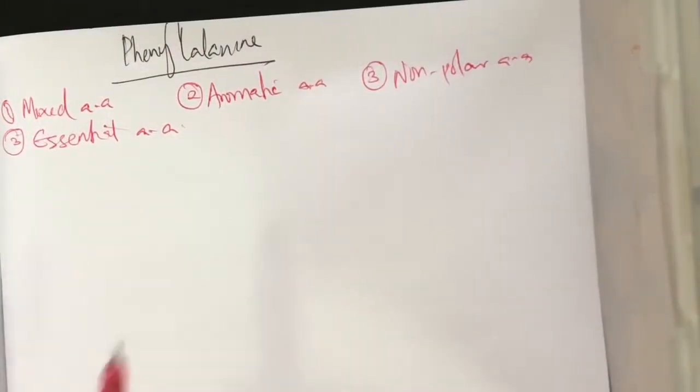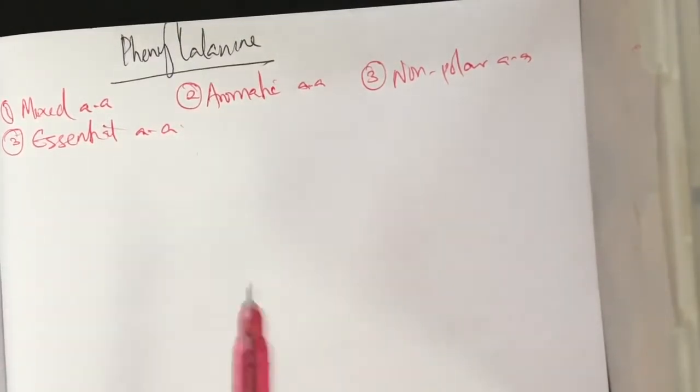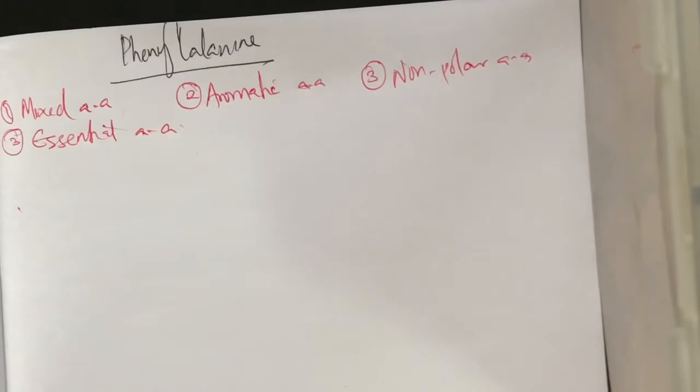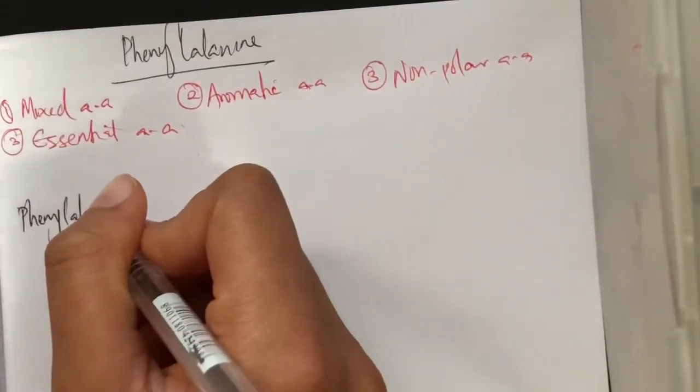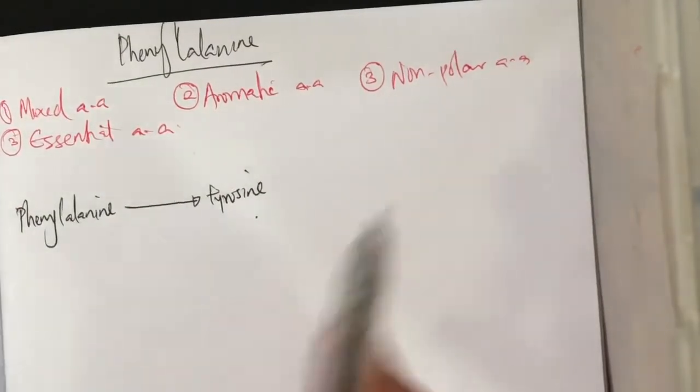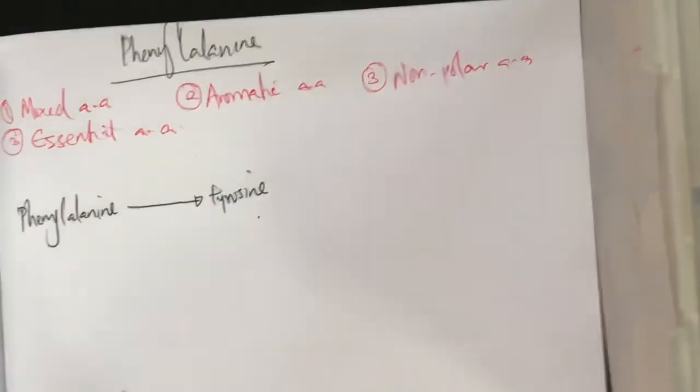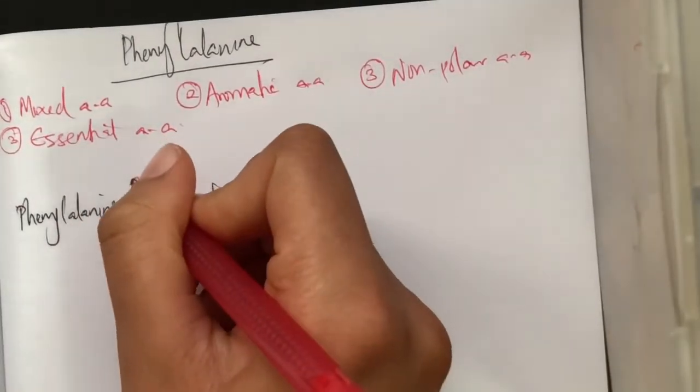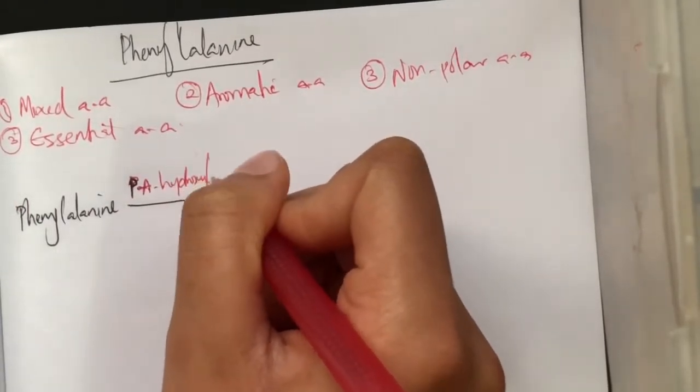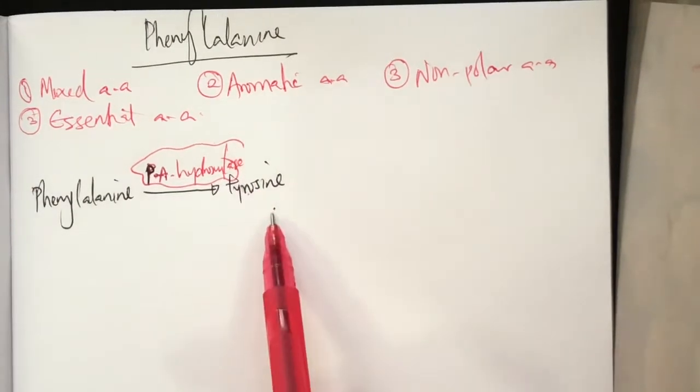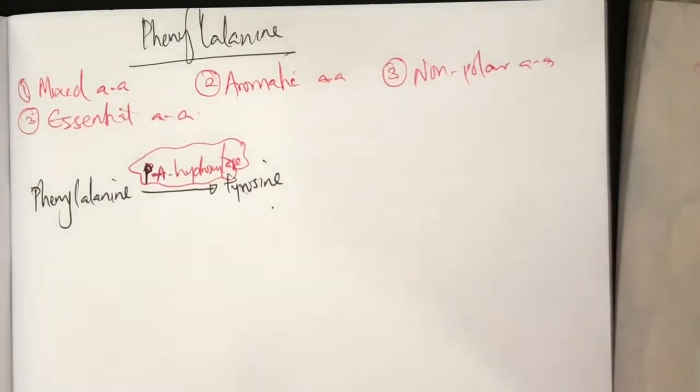Next we're going to discuss the metabolism of phenylalanine. So how is phenylalanine a mixed amino acid? That means phenylalanine is both ketogenic and glucogenic. The pathway starts from phenylalanine being converted into tyrosine. Yes, tyrosine is another amino acid that can be converted from phenylalanine. So phenylalanine is converted to tyrosine by an enzyme known as phenylalanine hydroxylase.